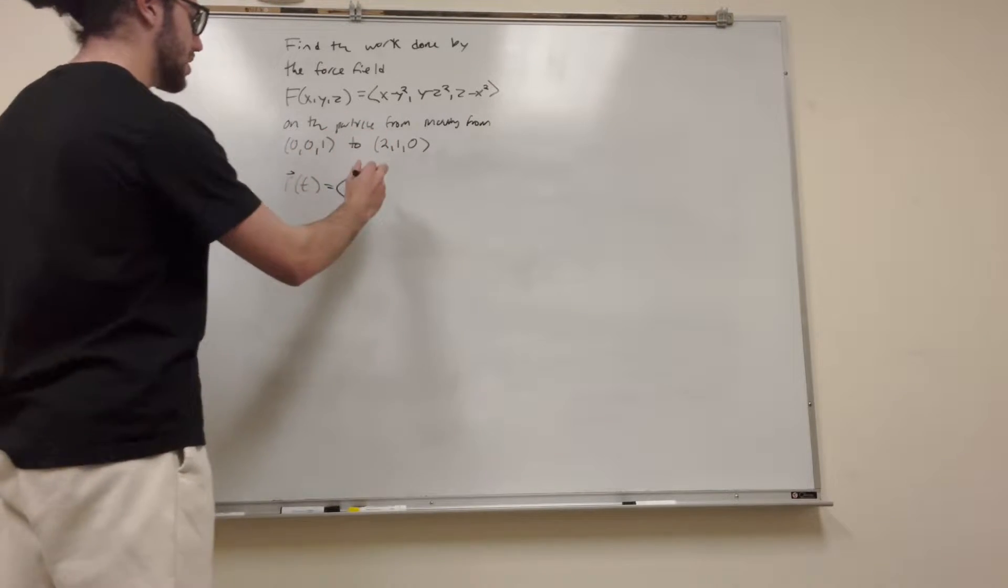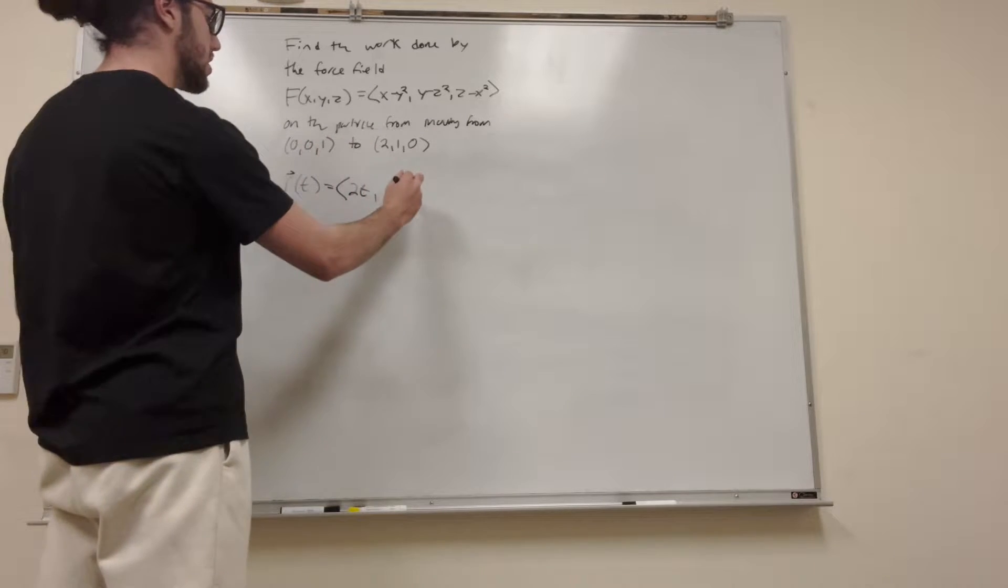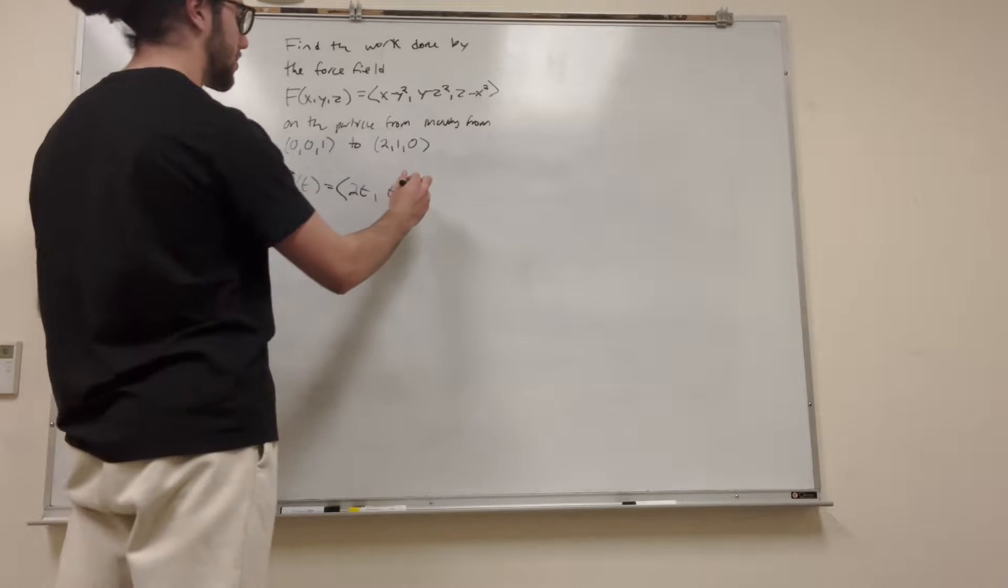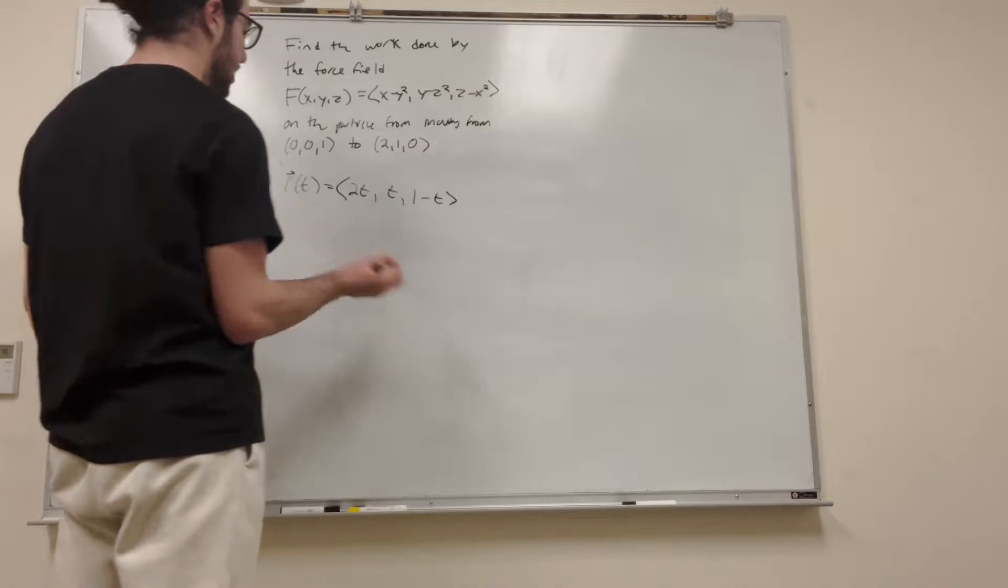This starts at 0 and it goes up 1, so it's just going to be T. This starts at 1, so it's going to be 1, but then it goes from 1 to 0, so it's going to be minus T, right? All right, pretty good.